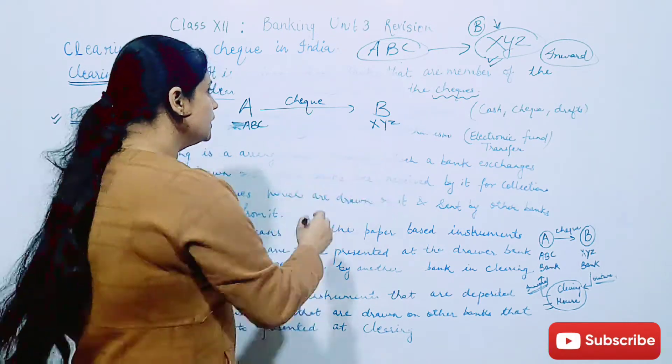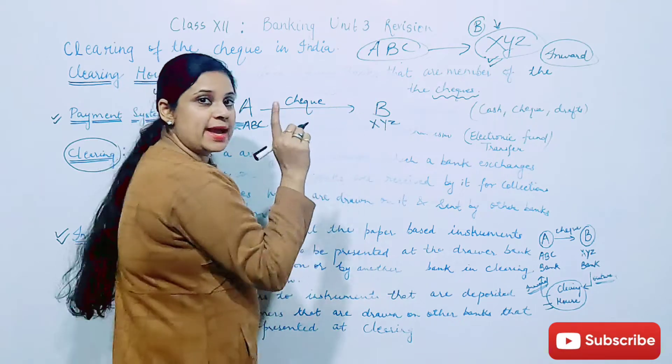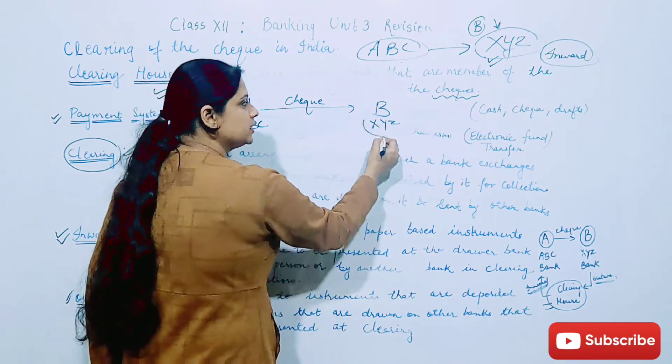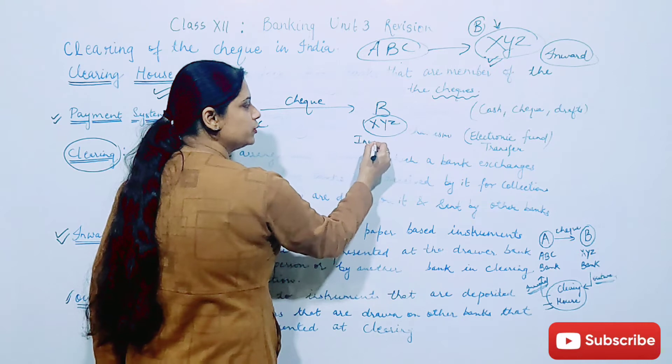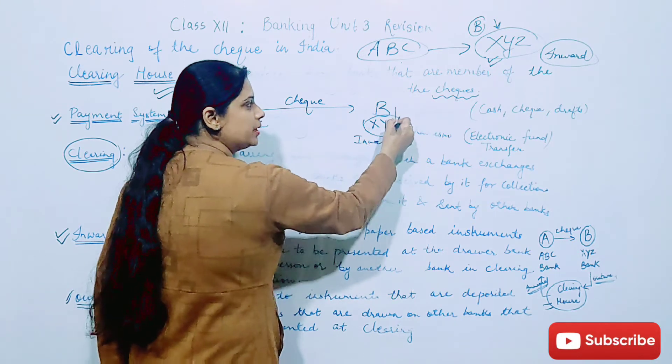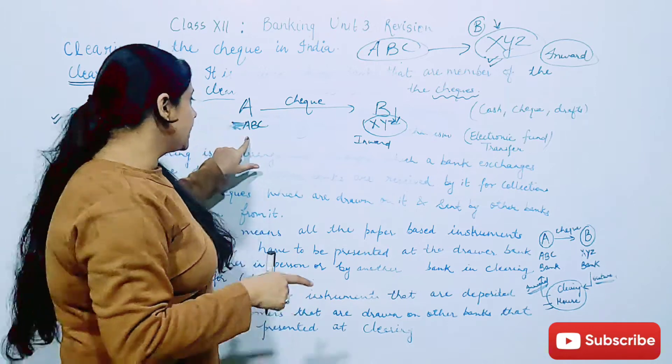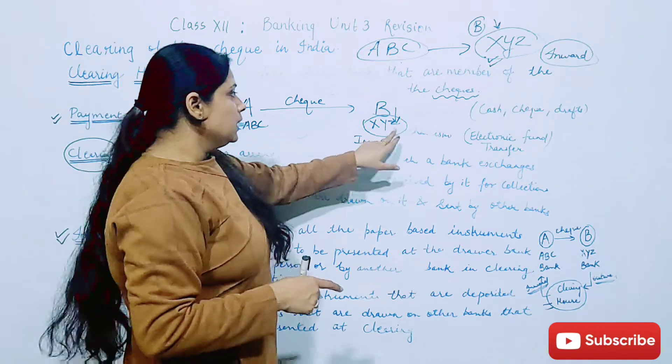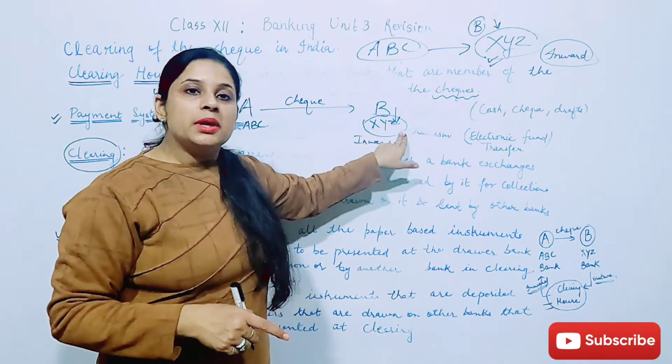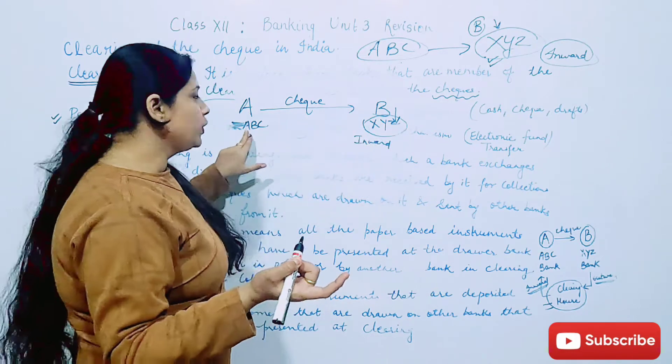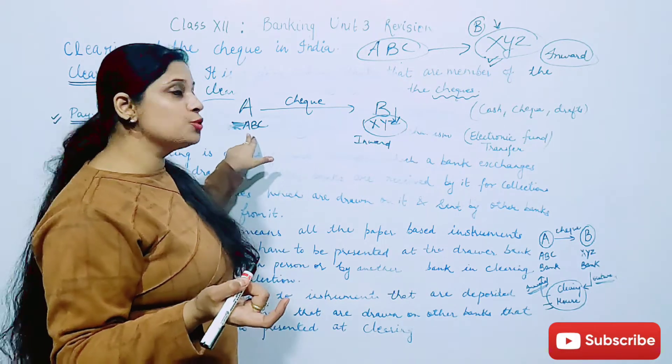Now B has presented it in XYZ. So what will we say? Inward. When B is putting the check in his bank which has given A, and which bank? ABC bank. Now XYZ bank will say this is not my bank check, this is from ABC bank, so clearing payment from here.